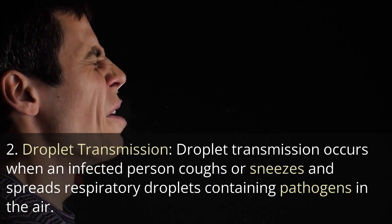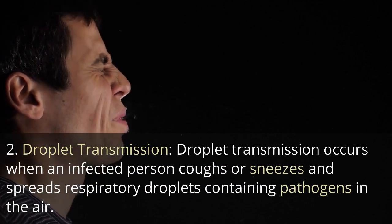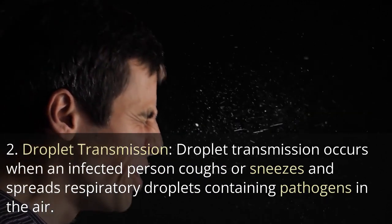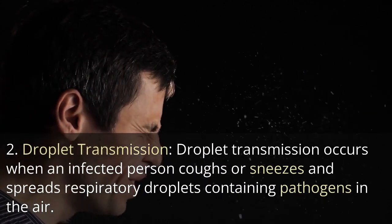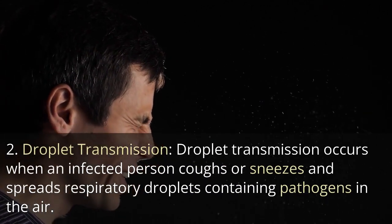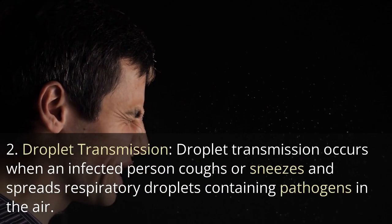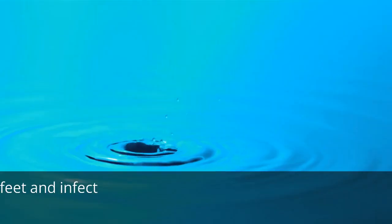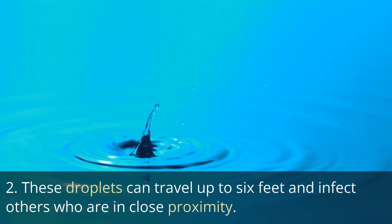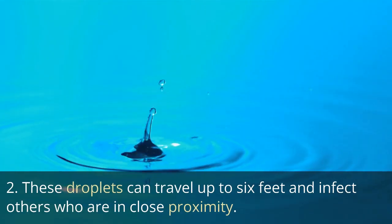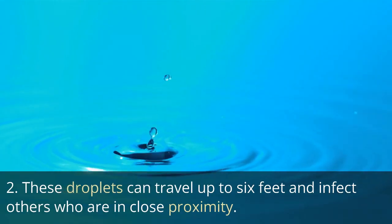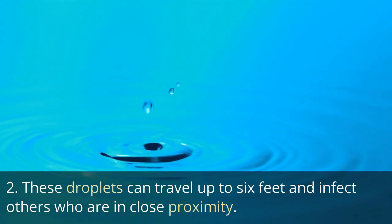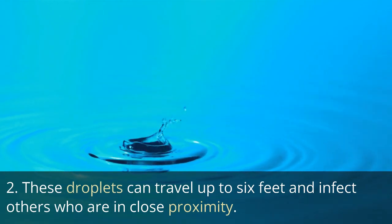The second route is droplet transmission. This occurs when an infected person coughs or sneezes and spreads respiratory droplets containing pathogens in the air. These droplets can travel up to 6 feet and infect others who are in close proximity.